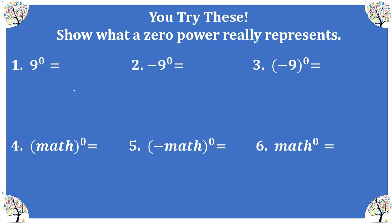Pause the video and try these. In number 1, we have 9 raised to the 0 power, so that looks like 9 over 9, which gives us 1. Number 2, the base is 9, so 9 divided by itself gives us negative 1. In our third example, the base is negative 9, so negative 9 divided by itself gives us positive 1. Remember, any time an expression is raised to 0 it equals 1, but be careful when a negative is attached out front.